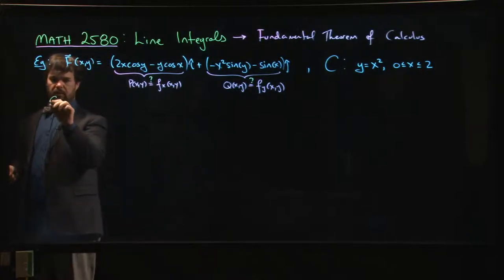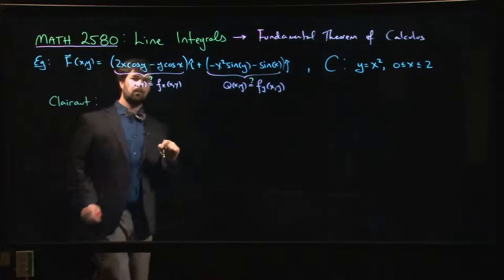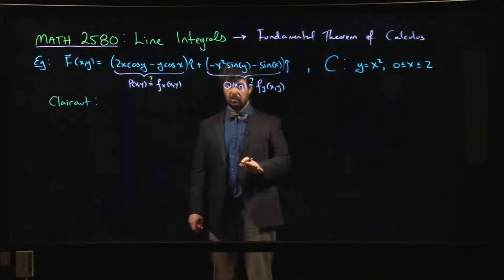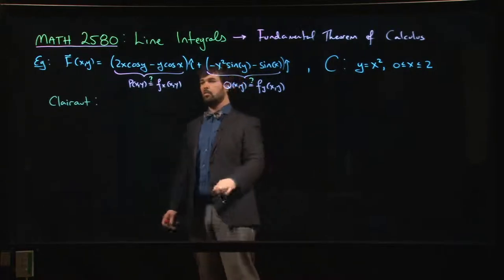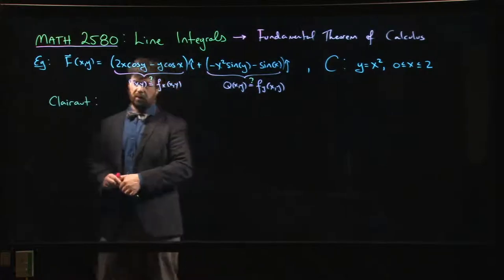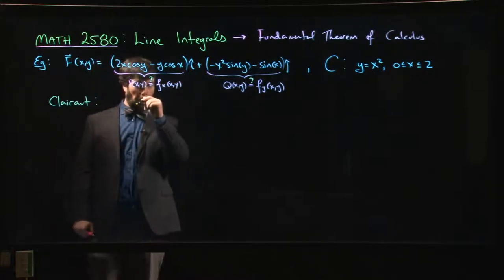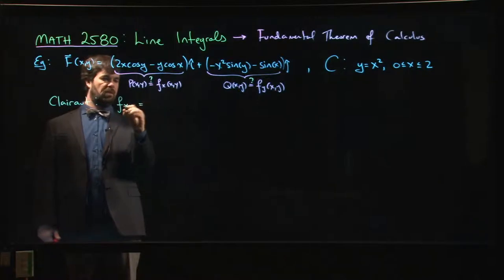We know that Clairaut's theorem says that as long as these come from a function which is twice continuously differentiable, and generally we assume that our vector fields are at least one time continuously differentiable, so if it does come from a gradient then it's coming from a C2 function. So Clairaut's theorem says that the partial derivatives, the mixed partial derivatives should be equal.